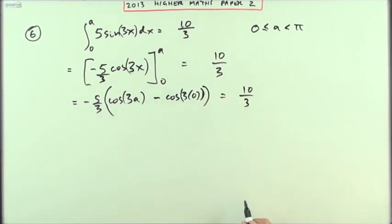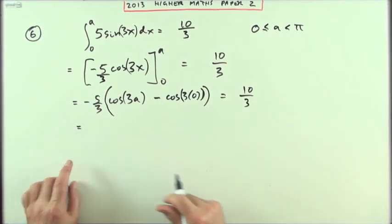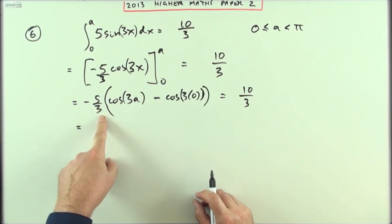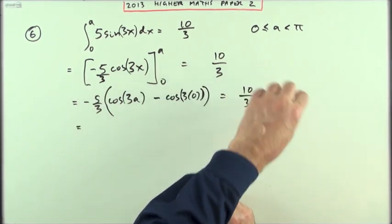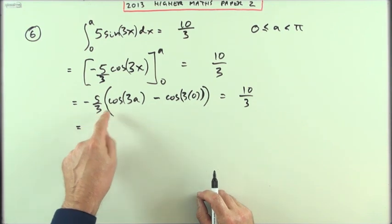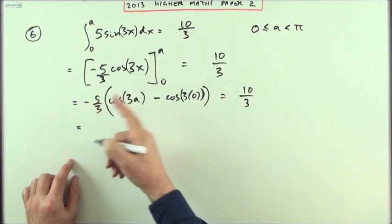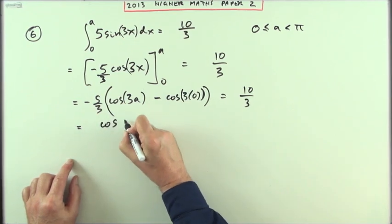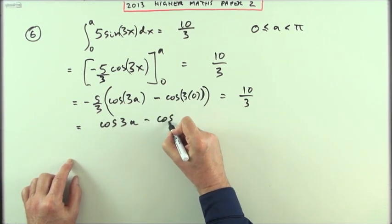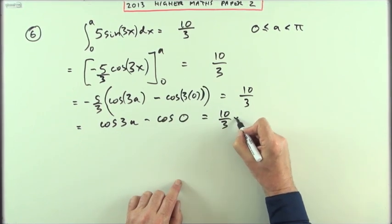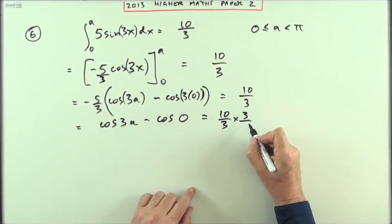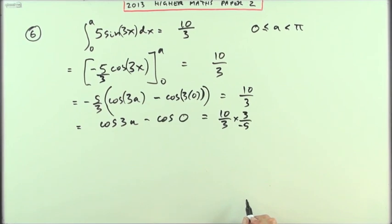These brackets are getting a bit cumbersome there. The handy thing about taking that out just now is I can immediately just pop that over the other side, multiply both sides by 3, divide both sides by negative 5. So I've just got cos 3a minus cos 0 would equal, times, take the 3 across and multiply if you like it that way, over negative 5.